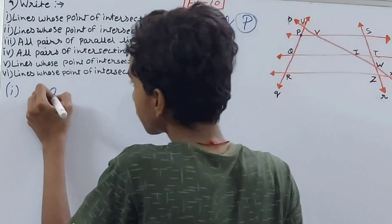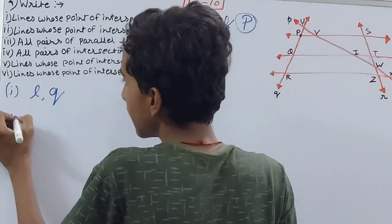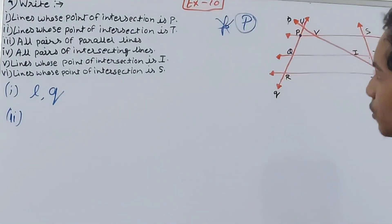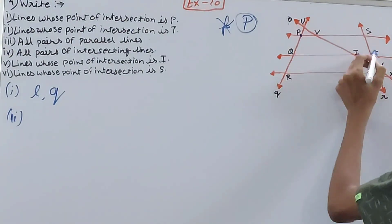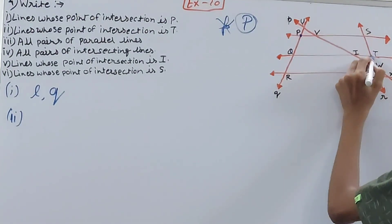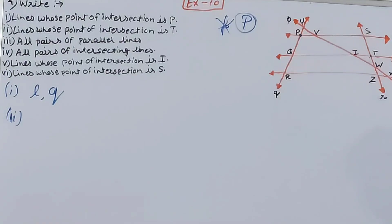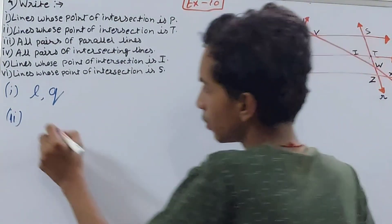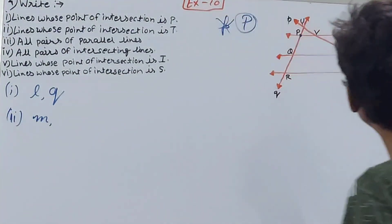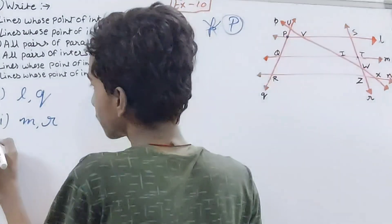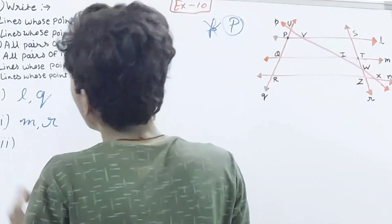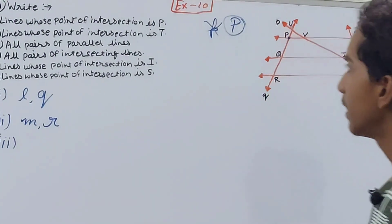For part two, we need lines whose point of intersection is T. Searching for point T in the figure, we can see two lines intersecting there: line m and line r. So the answer is m and r.